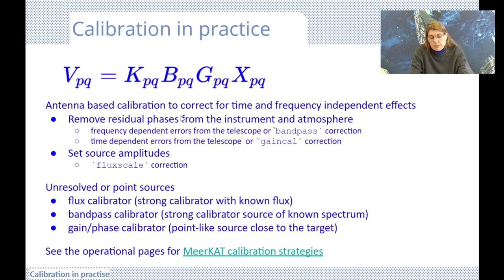Conceptually, calibration solves for each Jones matrix starting on the left with the K or delay correction matrix, followed by B, bandpass and G complex gain. As each solution is calculated, it is temporarily applied to the calibrator to correct the distortion before calculating the next Jones matrix. This is done inherently in CASA, as you will see from the CASA calibration commands in our presentation.